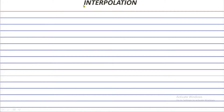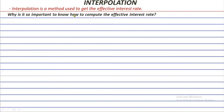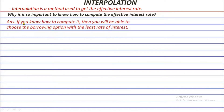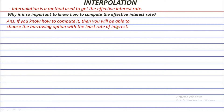This is episode 7 of the present value series and we will be talking about interpolation. Interpolation is a method to get the real or effective interest rate that the debtor will be paying. If you know how to compute the effective interest rate, you'll be able to choose the borrowing option with the least rate of interest, because there are a lot of borrowing options out there and you need to choose the one with the least cost and least burden.